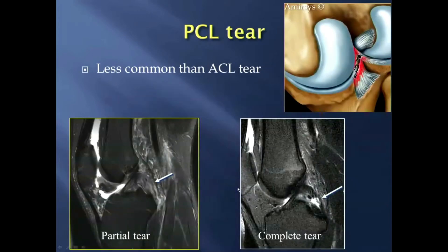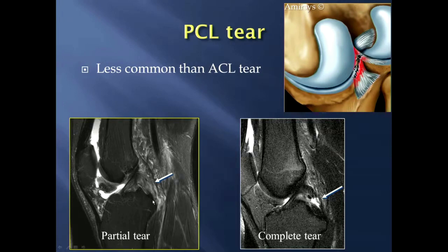PCL tears are less common than ACL tears. They can have the same types of injuries: a partial tear, as seen in this case with diffuse increased signal within a partially torn PCL, and a complete tear where you have a fluid gap. Partial tears of the PCL typically heal, so PCL reconstructions are actually much less common than ACL reconstructions.